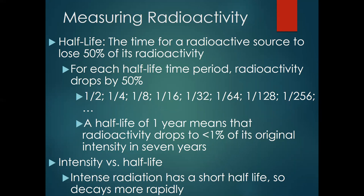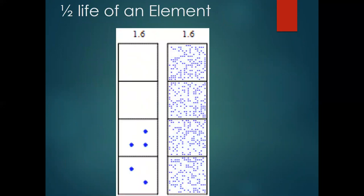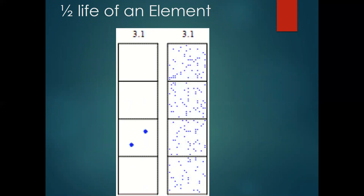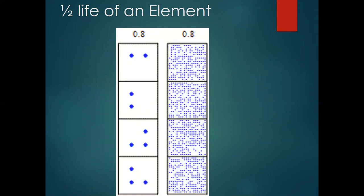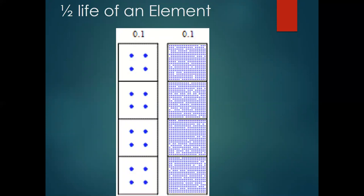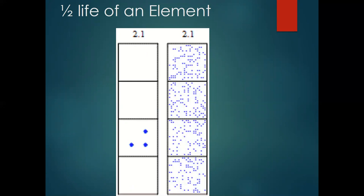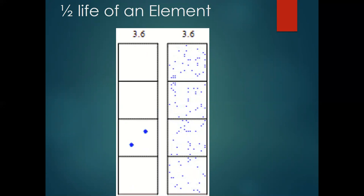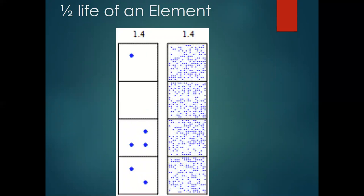Let's look at a picture of what this looks like. We have a small sample and a large sample of element A. Watch how every tenth of a second, half of the atoms disappear and become not the original element. It takes four seconds for all atoms to disappear on both sides — every tenth of a second it undergoes a half-life until there are no radioactive atoms of the original left; they've all broken down into something else.